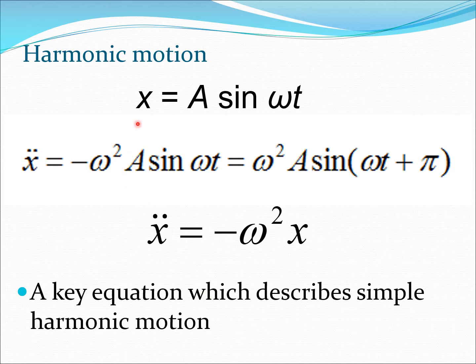So one more thing we can see is that if we take x and we take the second derivative, we can see that this A sine ωt term is same as x. Therefore, I can write x double dot equals negative of circular frequency squared into x.